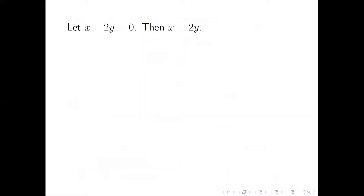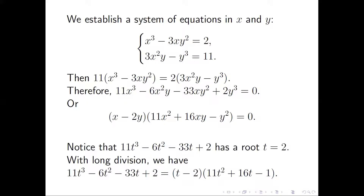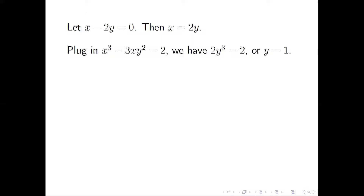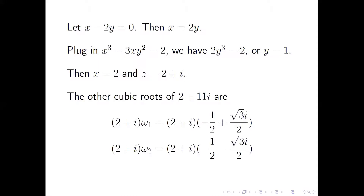Let x − 2y = 0. After the factorization we have two cases, but as mentioned we only need one simple solution, so we take x − 2y = 0, which gives x = 2y. Plugging into the first equation and solving, we get y = 1, then x = 2, and the cubic root is z = 2 + i. The other cubic roots of 2 + 11i are obtained accordingly.